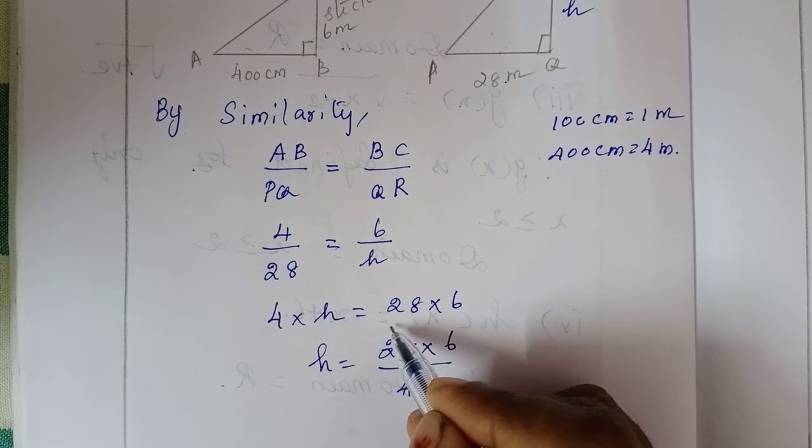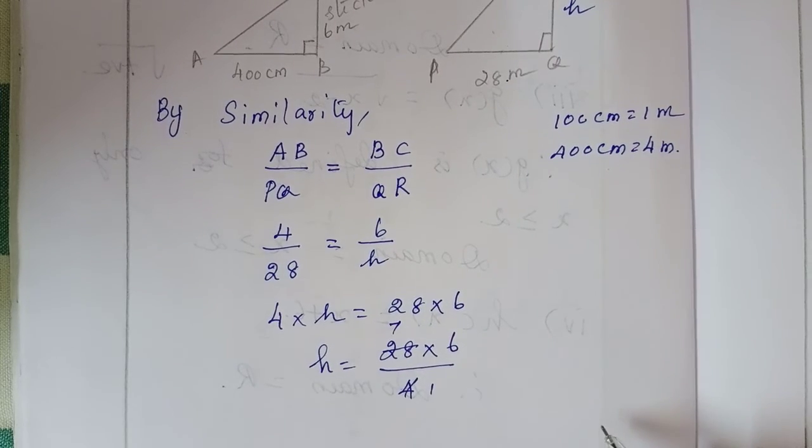So h is equal to 28 into 6 divided by 4. 4 goes into 28 seven times.